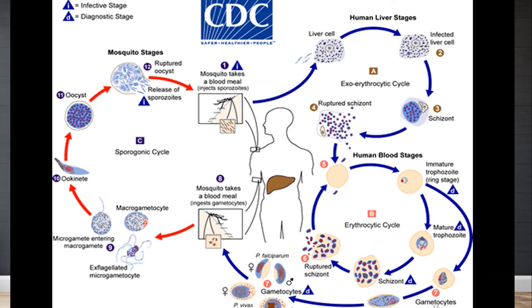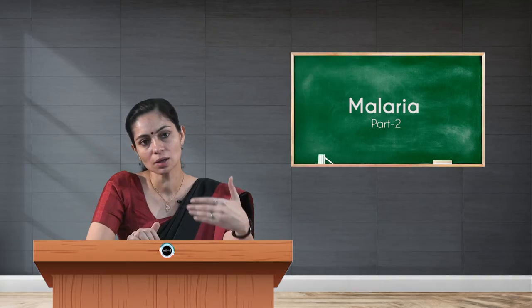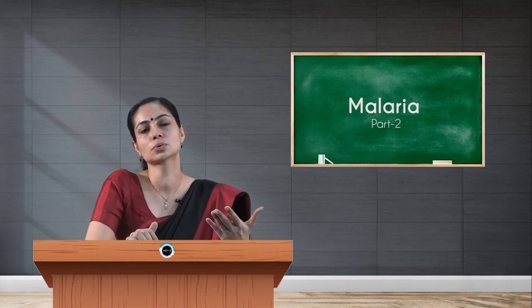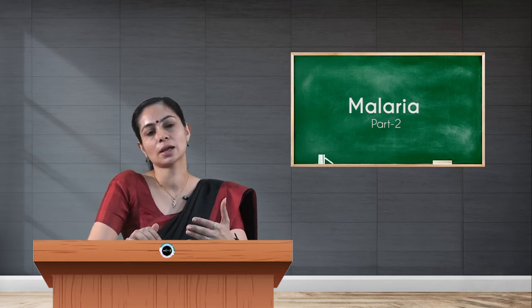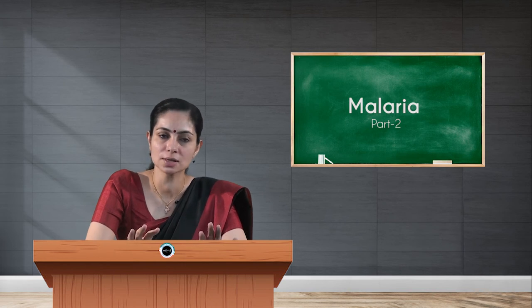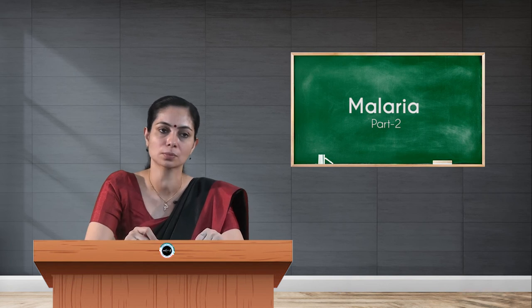Once the mosquito bites a man, sporozoites undergo the pre-erythrocytic cycle first, then proceed to the erythrocytic cycle. There is also an exo-erythrocytic cycle where the hypnozoites of Plasmodium vivax can cause relapse of the infection. After the pre-erythrocytic cycle, it goes to the erythrocytic cycle, then to gametogany. Once gametogany is complete, the gametocytes are ready for the mosquito to pick up, continuing the lifecycle.